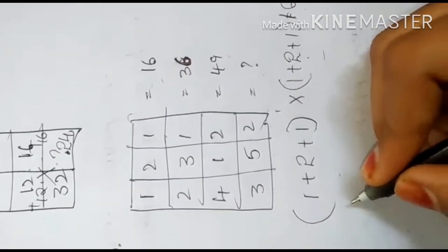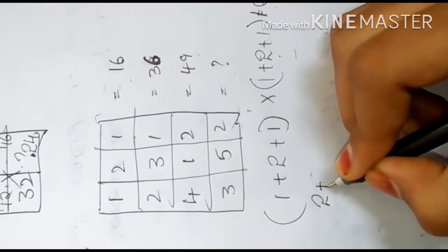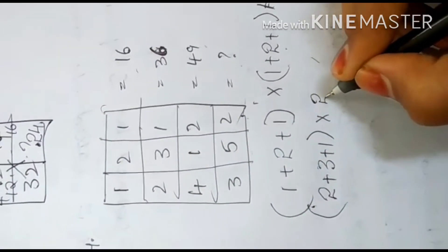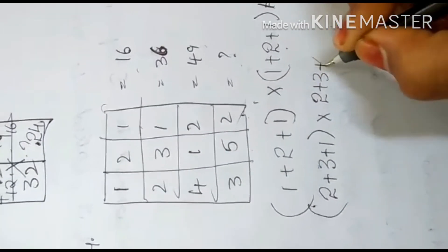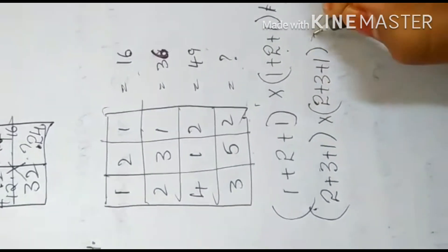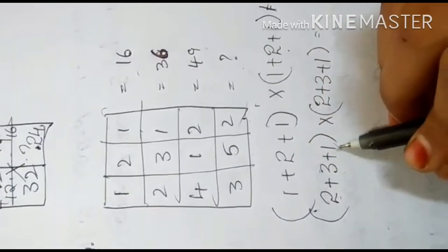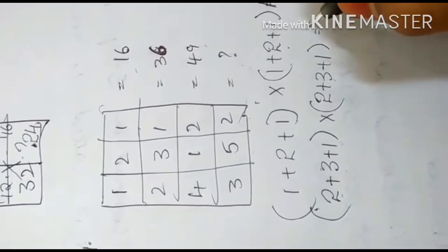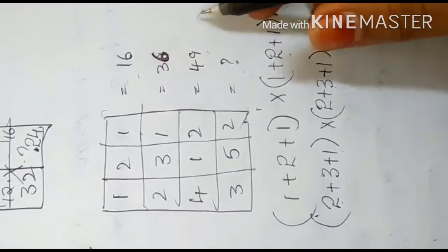Okay, right. And here same, 2 plus 3 plus 1 in brackets, into 2 plus 3 plus 1 in brackets, equals see, 2 plus 3 is 5 plus 1 is 6. This is also 6. 6 into 6 equals 36. Right, here we got 36.